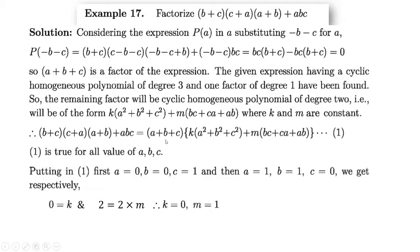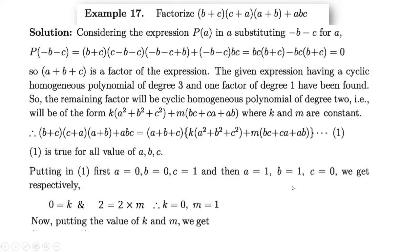Equation 1 is true for all values of a, b, c. Putting a = 0, b = 0, c = 1 in equation 1, we get the value of k = 0. Then putting a = 1, b = 1, c = 0 and k = 0 in equation 1, we get 2 = 2m, so the value of m = 1. Putting the values of k and m, we get the factorization: the expression equals (a + b + c)(bc + ca + ab).